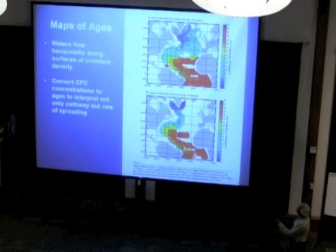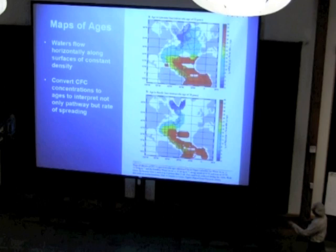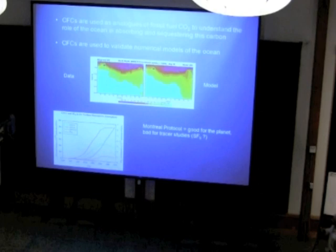You can make maps of ages where you can see water masses are young, where blue is young, moving into the interior of the Atlantic and along the western boundary. And you can get rates of spreading.